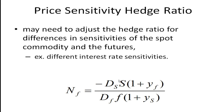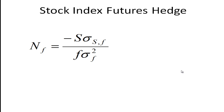On the other hand, if the duration of the spot position is 45 days and the duration of the futures contract — say Treasury bill futures — is 90 days, then you have something that's half as sensitive to a change in interest rates as the futures contract, so you only need half as many contracts to hedge. You have to make that adjustment.